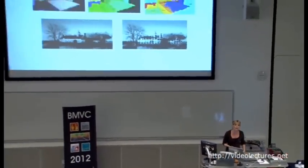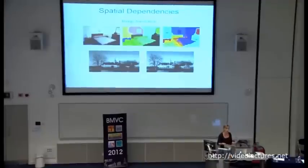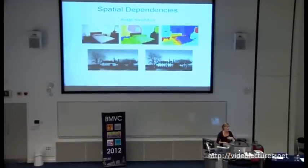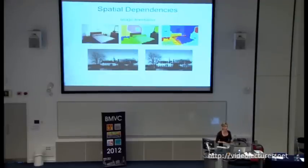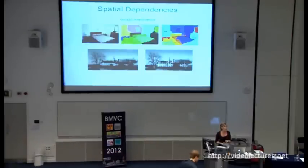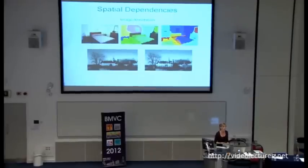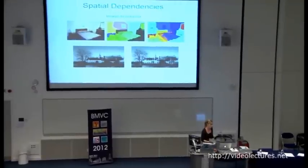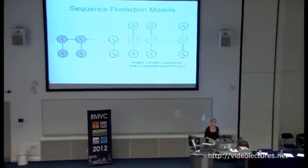Those were examples of sequence prediction, but in vision we have also seen more general structure prediction problems where the underlying graph is not necessarily a sequence. For example, in image annotation you might want to tag regions in an image with semantic labels, and it seems critical that you take into account the labels of surrounding areas. There have been multiple applications of this in the vision community.